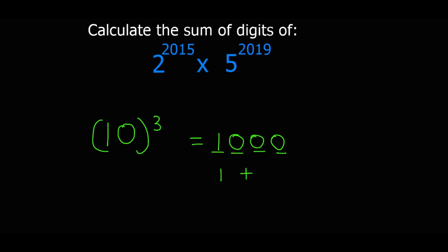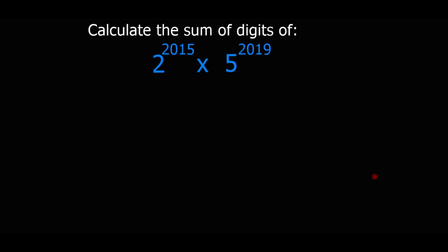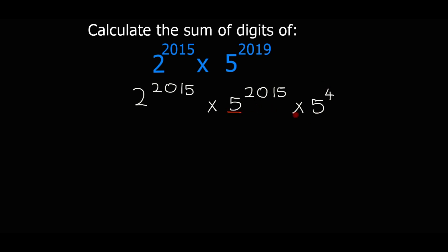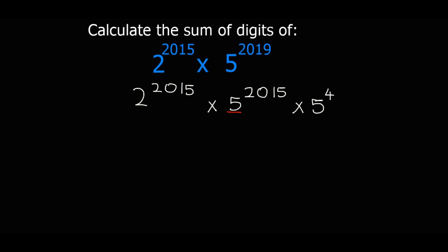Now let's find the sum of digits of the big number. We are going to apply the laws of exponents. We have 2 to the exponent 2015 times 5 to the exponent 2019. I'm going to write 5 to the exponent 2019 as 5 to the exponent 2015 times 5 to the exponent 4, because when multiplying like bases you keep the base and add the exponents: 2015 plus 4 equals 2019. The tip is to change the bigger exponent so it matches the smaller exponent.